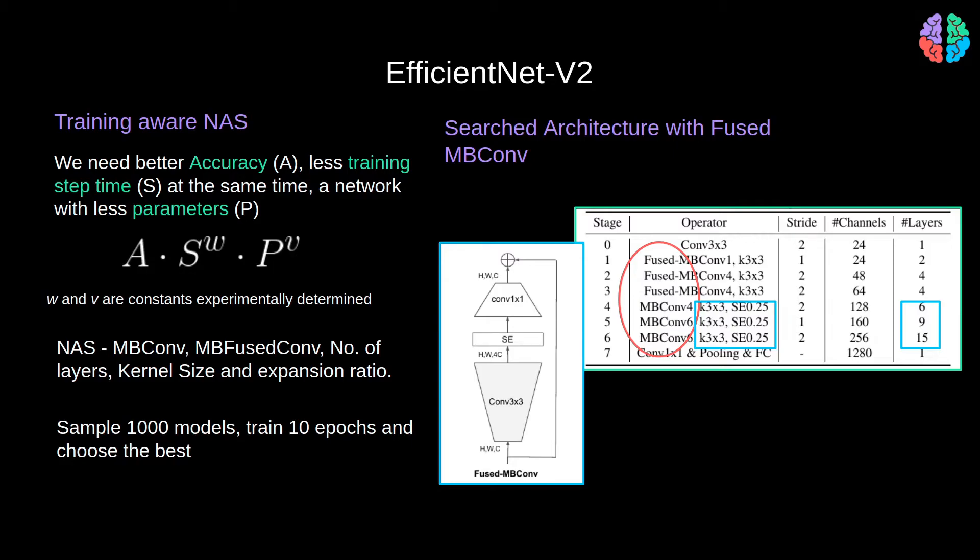This architecture is the small version of EfficientNet version 2. Lastly, like most recent papers, they propose the medium and large size network by adding more layers in stage 5 and 6 which seems to perform better.